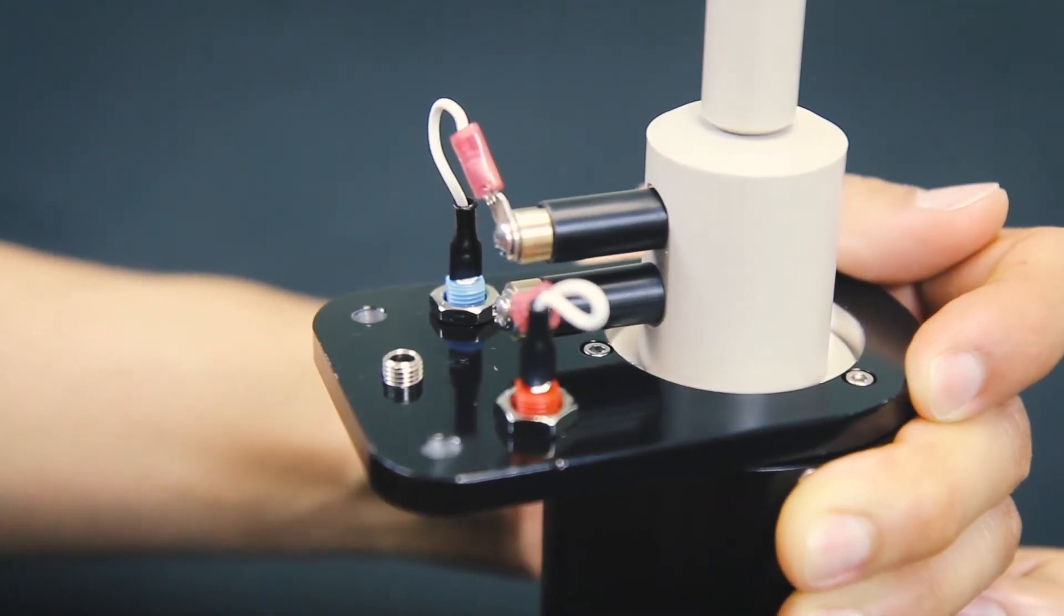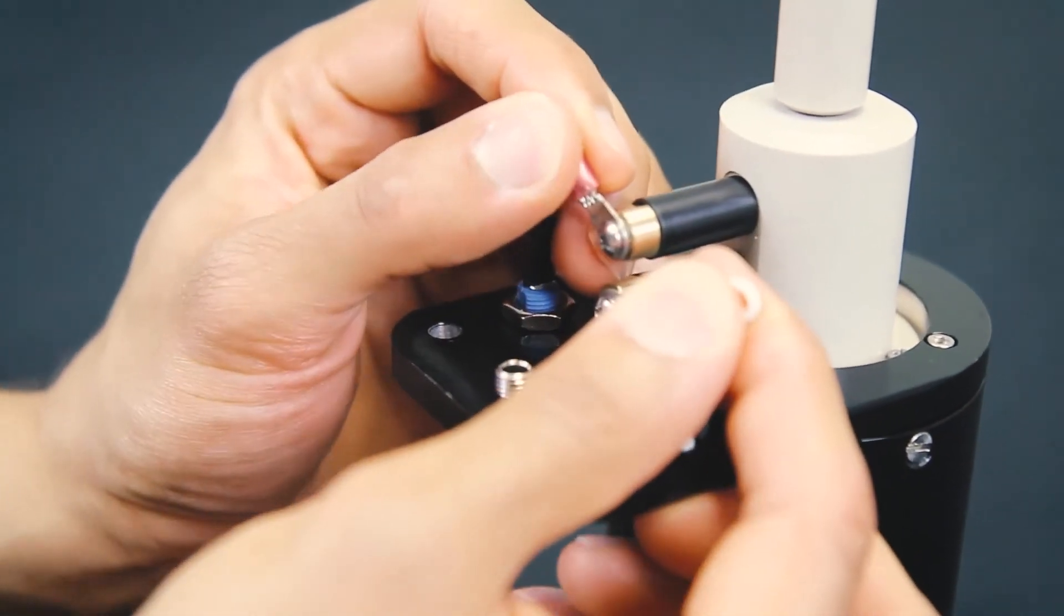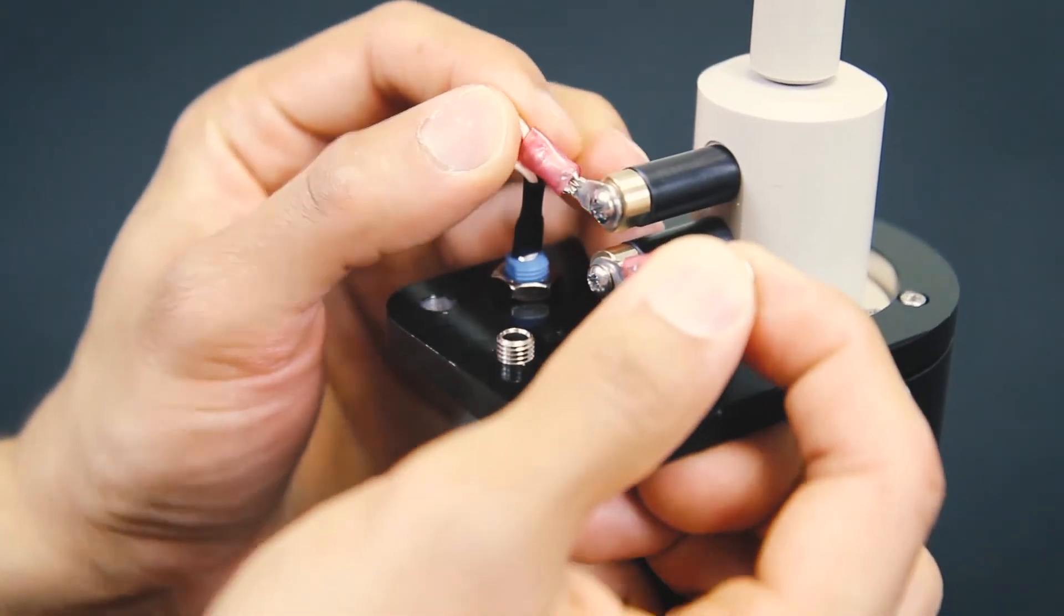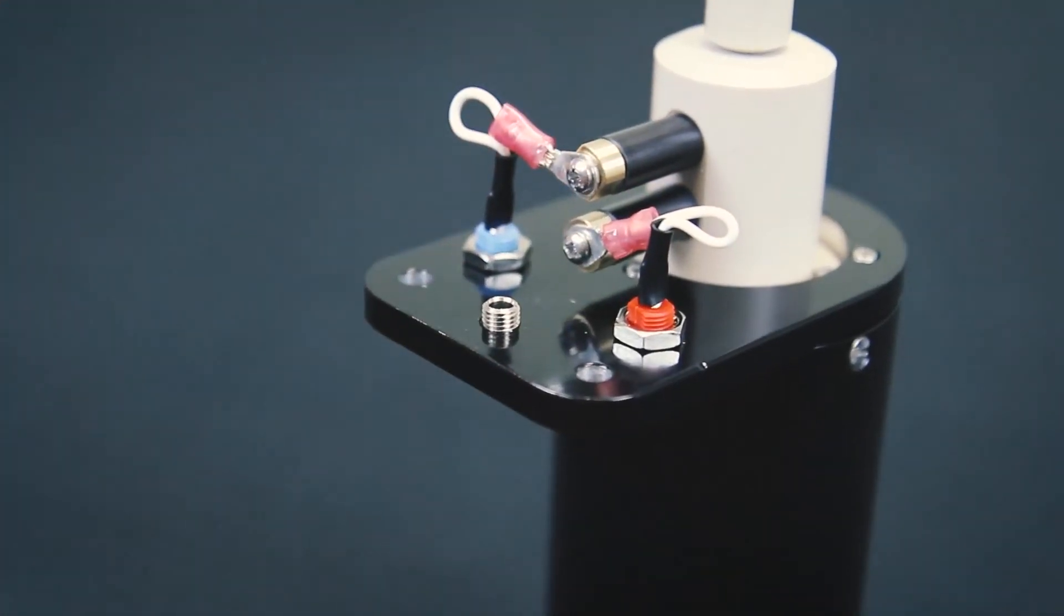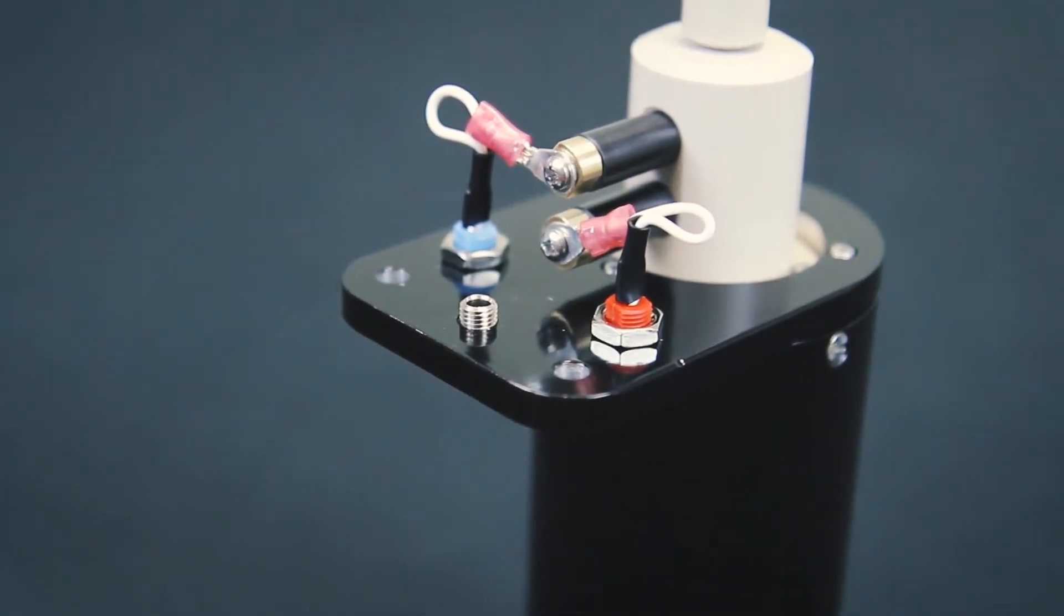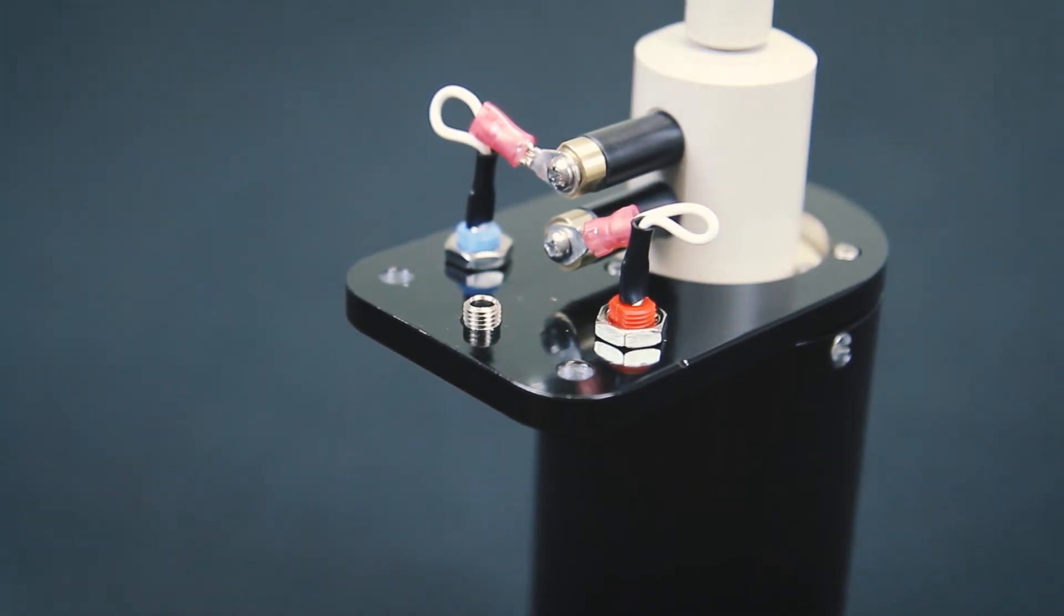Make sure the crimp is in the same orientation as it was at the beginning of this video, where the long side of the ring electrode crimp is perpendicular to the length of the shaft. Otherwise, it won't fit into the lift bracket.